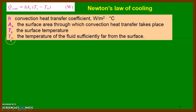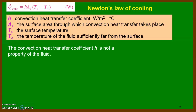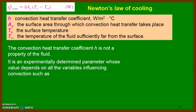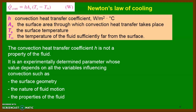The convective heat transfer coefficient H is not a surface property — it is a property of the fluid. It is an experimentally determined parameter whose value depends on variables that influence convection: surface geometry, nature of fluid motion, properties of the fluid such as density, viscosity, specific heat, and bulk fluid velocity. Experimentally we calculate H, and from H we calculate Q-dot convection.